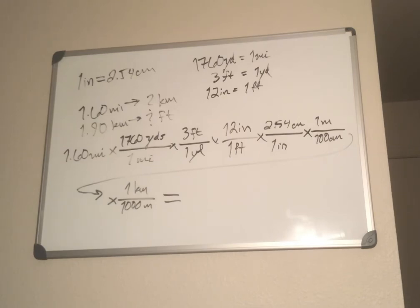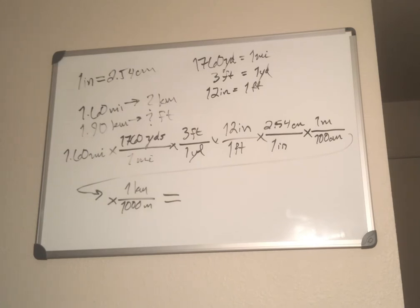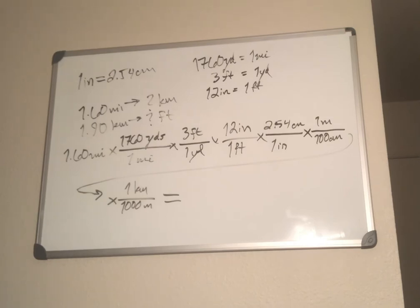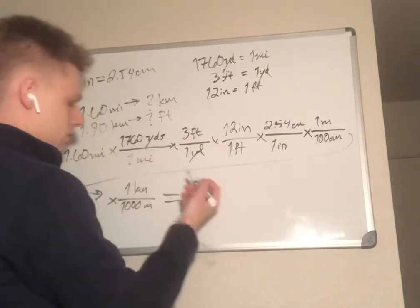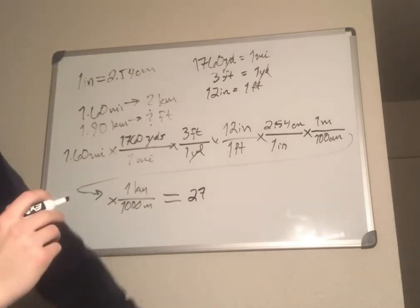So I'll put 1.60 times 1760 times 3, divided by 1, times 12, times 2.54 — leaving out the trivial divided-by-ones to save time, especially on a test. Then divided by 100, divided by 1000. The correct answer comes out to 25.7495, and rounding to three significant figures gives us 25.7 kilometers.